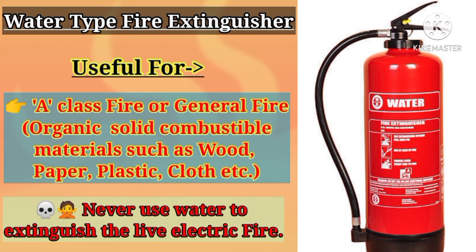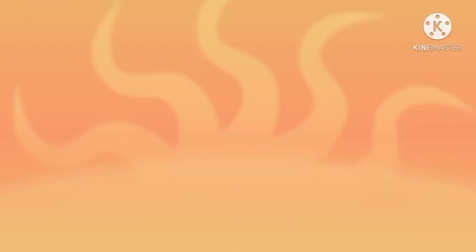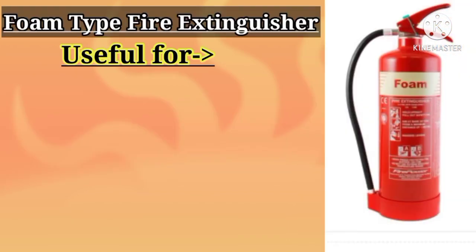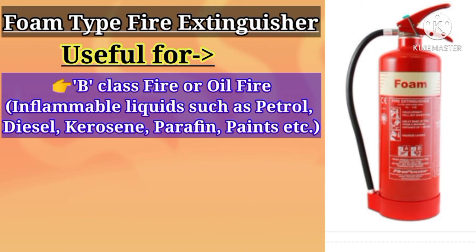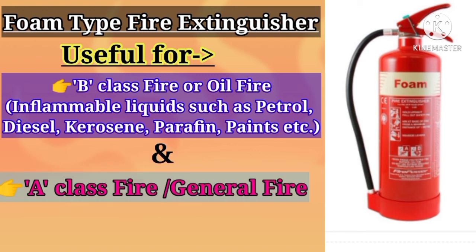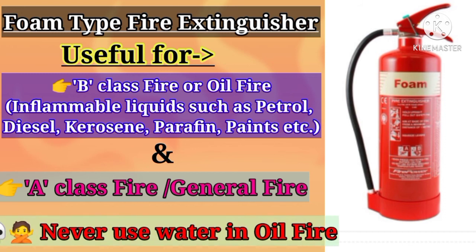Remember that water is never used to extinguish live electrical fire because water is a good conductor of electricity. In case of live electrical fire, switch off the main switch immediately. Foam type fire extinguishers are basically used in Class B fire or liquid fire — those fueled by inflammable liquids such as petrol, diesel, kerosene, and paraffin. They can also be used in Class A fire or general fire. Remember that water is never used in oil fire or liquid fire because oil is lighter than water and floats on the water surface — as a result fire will spread faster rather than being extinguished.